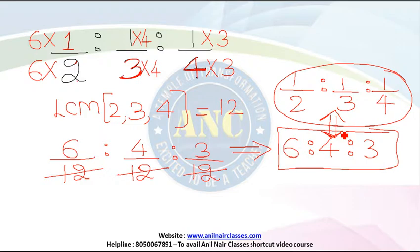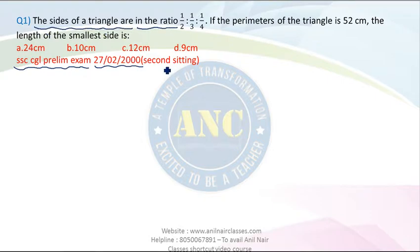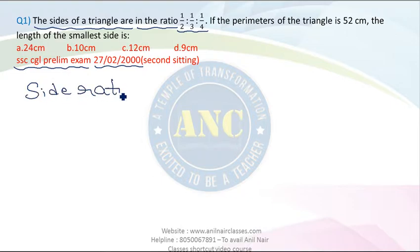The reason for discussing this fraction-to-whole-number ratio conversion is that it is needed in problems. Now let us move to our first problem. SSC CGL prelims examination question in the year 2000. The sides of a triangle are in the ratio 1/2 : 1/3 : 1/4, which we just proved is equivalent to 6 : 4 : 3.